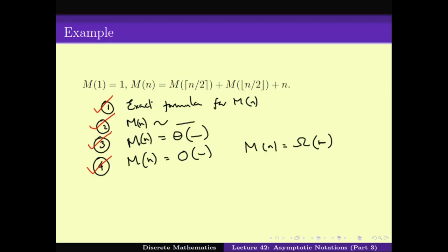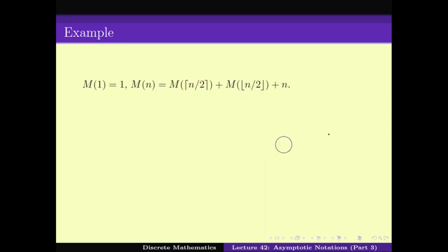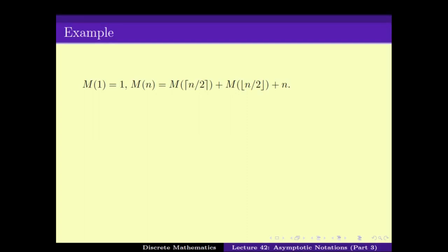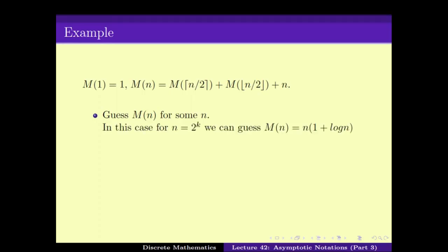Now, given a recurrence relation, the first thing to do is: can you get M(N), if not for all N, at least for some N? As we did, when N is a power of 2 we can get M(N) = N(1 + log N). Note that the 1 + does not make much difference because these are polynomials and only the big term matters, so this is essentially N log N.